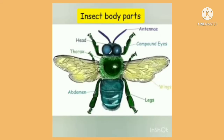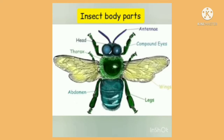And now let us see the body parts of an insect. The body parts of an insect are divided into 3 different parts, which are head, thorax, and abdomen. The head of an insect has an antenna and 2 compound eyes.